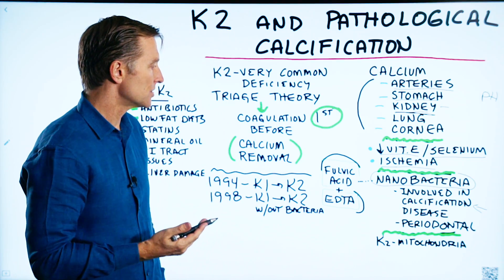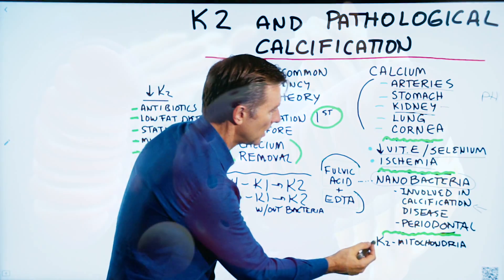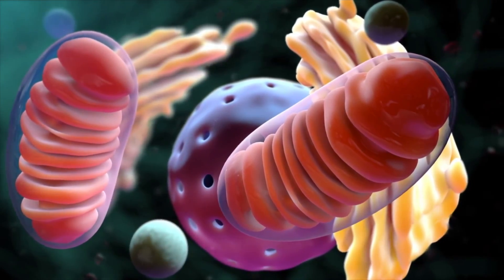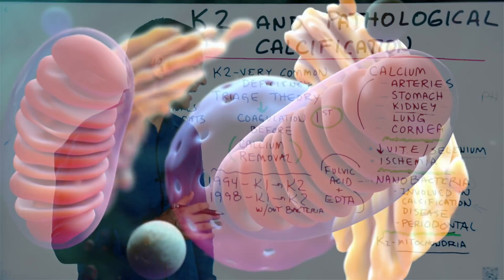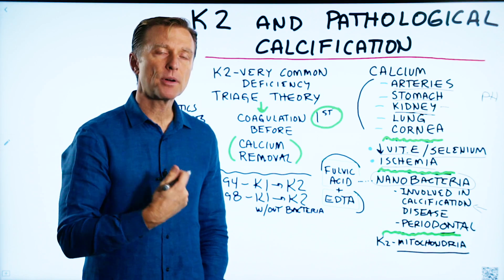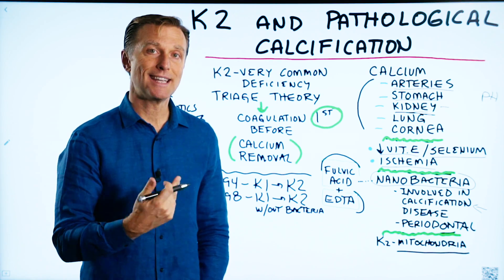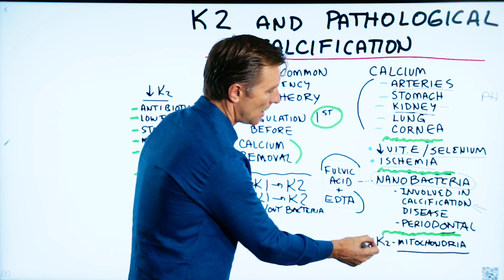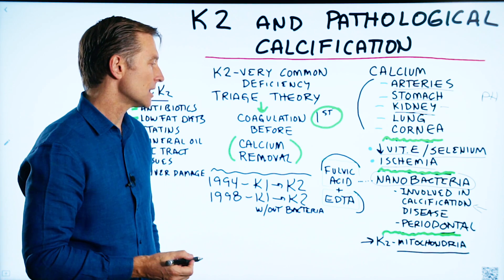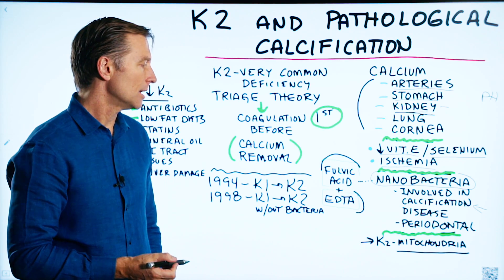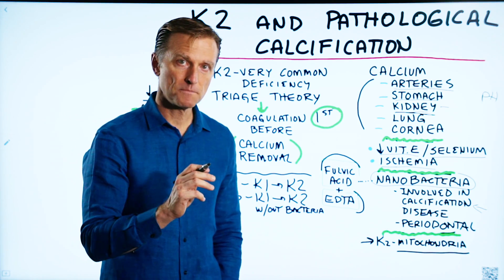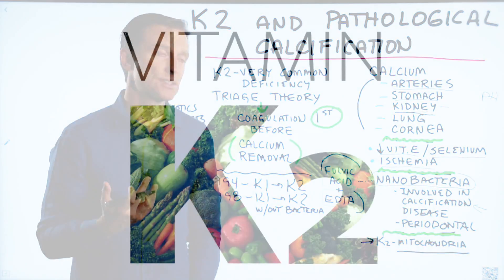There are other functions too. One involves the mitochondria, and this is one of the reasons why if you have enough vitamin K2, you have a lot of energy. I personally notice when I take vitamin K2, I'm much stronger when I work out. It has a lot to do with building up the mitochondria, especially with skeletal muscle, and providing endurance.